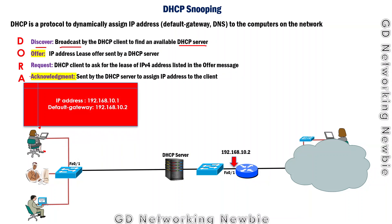Now let's suppose that after these four messages, the DHCP server has sent an IP address to the client — for instance, 192.168.10.1. In addition to that IP address, the DHCP server also sent the information about the default gateway, which is the IP address of the router interface, so that the client can send information to other networks.